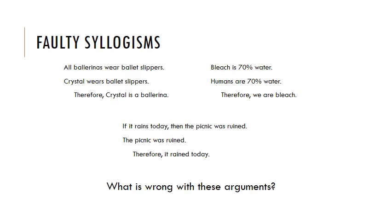Just because you put something in a premise-premise-conclusion format doesn't mean it's a good argument. Here are some faulty syllogisms — ones that don't work. All ballerinas wear ballet slippers. Crystal wears ballet slippers. Therefore, Crystal is a ballerina. Bleach is 70% water. Humans are 70% water. Therefore, humans are bleach. And: if it rains today, then the picnic was ruined. The picnic was ruined; therefore it rained today. Each one of these is faulty — the premises do not prove the conclusion. Take a second and see if you can figure out what's wrong with them.